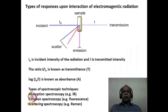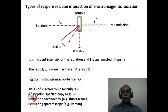This slide tells us about the responses upon interaction of electromagnetic radiation with a sample. Consider incident light I₀ falling on a sample. The substance can absorb some of this light and transmit the remaining light with intensity I. I₀ minus I corresponds to the absorbed intensity. Instead of absorbing the light, the sample can scatter the light — if the scattered light has the same wavelength, we call it Rayleigh scattering; if it has a different wavelength, we call it Raman scattering, which is the basis of Raman spectroscopy.